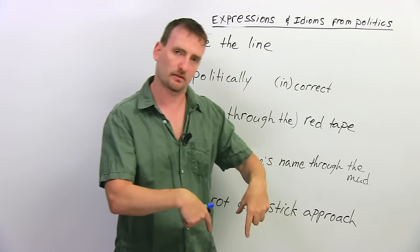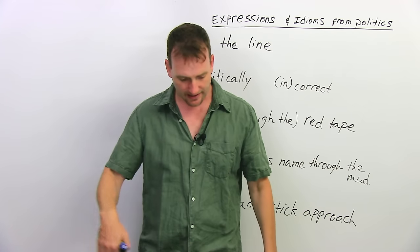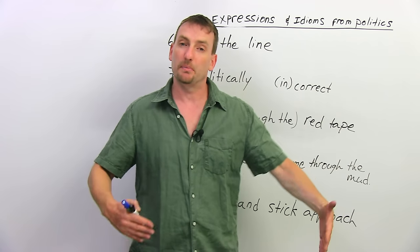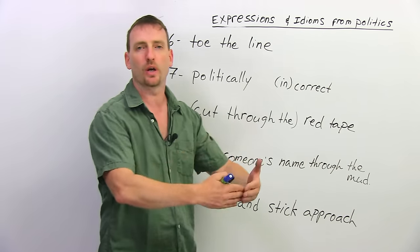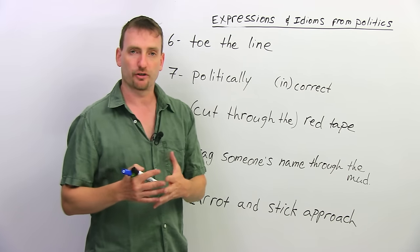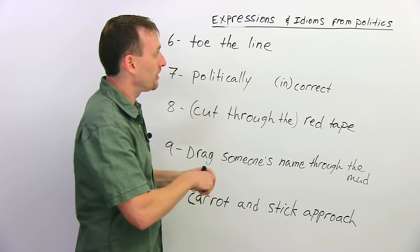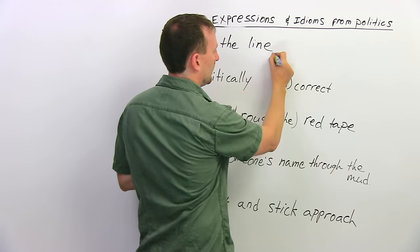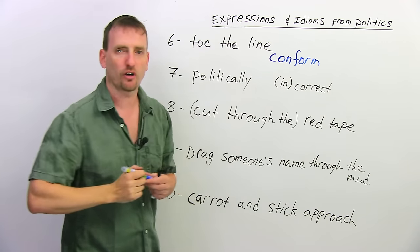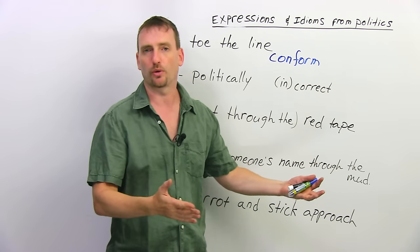Toe the line. So toe is like toe on your foot. You have ten toes, ten fingers. Toe the line. Basically, you have a line. Everybody's toes should be on the line. Basically, it means everybody has to be going in the same direction. Everybody in a team or a group needs to be working towards the same target. Everybody needs to conform. Conform means don't try to be different. Don't argue with the team. Do what everybody else is doing. Toe the line.